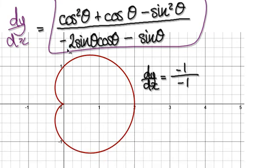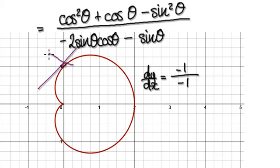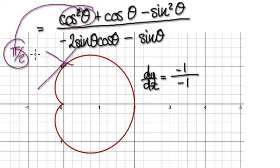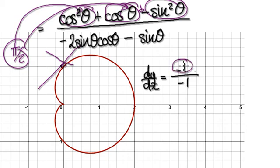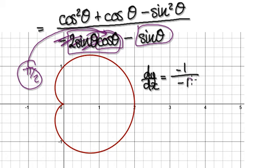Now we want to find the equation of the tangent line at theta equals pi over 2. We put pi over 2 into the dy by dx expression. The first term becomes zero, this part becomes one, and with the minus sign out front it becomes negative one. In the denominator, putting in pi over 2 gives zero, leaving negative one. So dy by dx at pi over 2 equals 1.